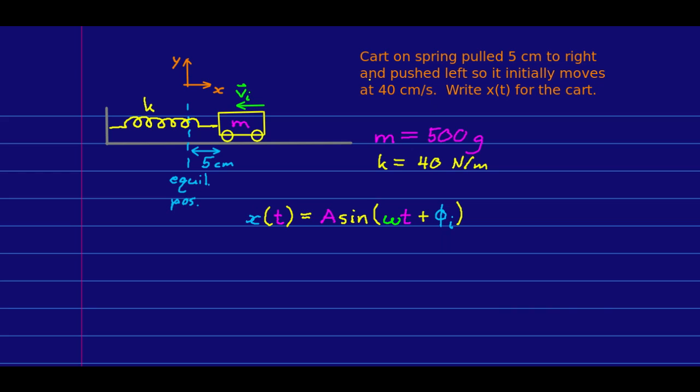Let's do an extended example that brings these ideas together. Here's a cart attached to a spring, initially pulled five centimeters to the right from equilibrium. Then it's given a quick shove so it starts at five centimeters to the right and moving at 40 centimeters per second back towards equilibrium. We're going to write the position as a function of time. To fully write it, we need to know the amplitude, the angular frequency, and the initial phase. Note the amplitude is not five centimeters because when it's at maximum displacement, the cart should be stationary.